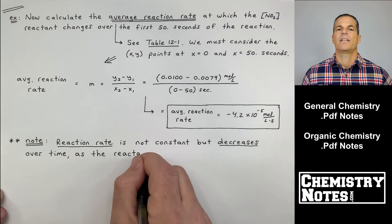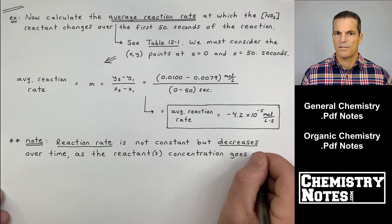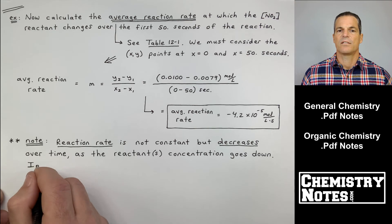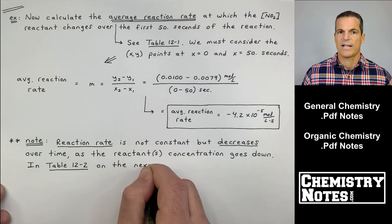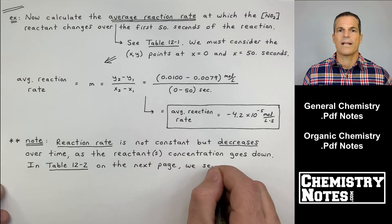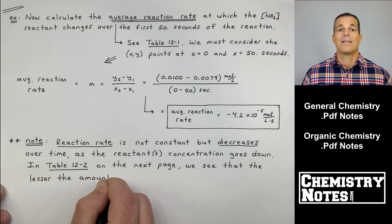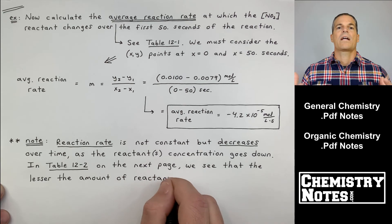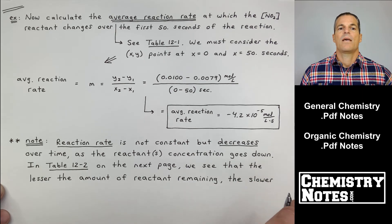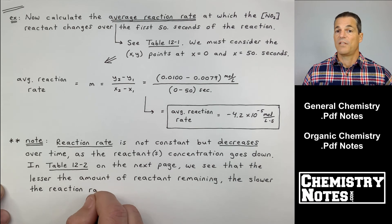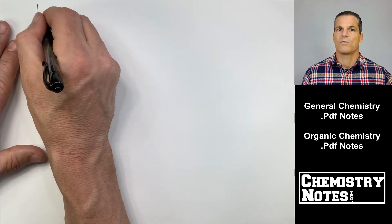Note that the reaction rate is not constant — it decreases over time as the reactant concentration goes down. This makes sense: as you lose more reactant, there's not as much around to decompose or convert to products at the same pace as at time zero when you have the maximum amount of reactant. Table 12.2 on the next page will show that the lesser the amount of reactant remaining, the slower the reaction rate becomes.